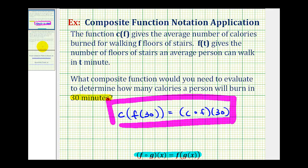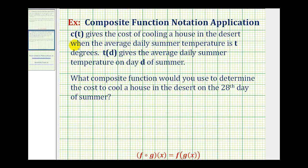Let's take a look at a second example. C of t gives the cost of cooling a house in the desert when the average daily summer temperature is t degrees. T of d gives the average daily summer temperature on day d of summer. What composite function would you use to determine the cost to cool a house in the desert on the 28th day of summer?